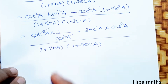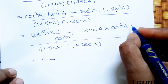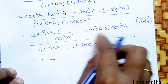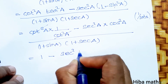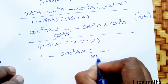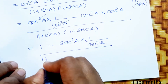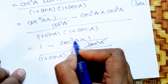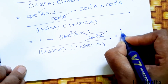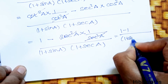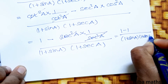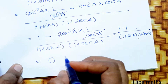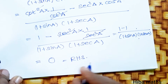After simplification, cos squared a cancels. We see that cos squared a equals 1 over secant squared a. So secant squared a times (1 over secant squared a) gives 1, and the secant squared a terms cancel. The balance gives 1 minus 1 divided by (1 plus sin a)(1 plus secant a). Since 1 minus 1 equals 0, and 0 divided by anything is 0, this equals RHS. Hence proved.